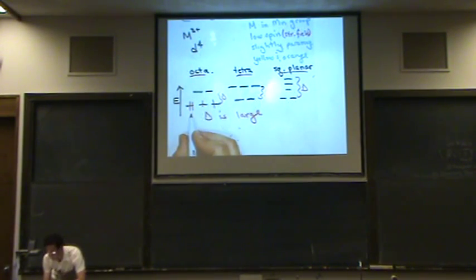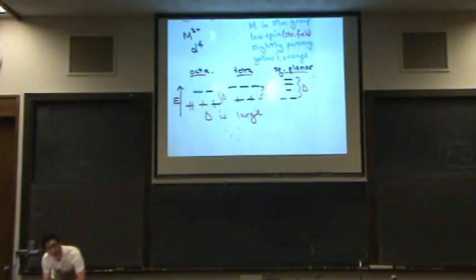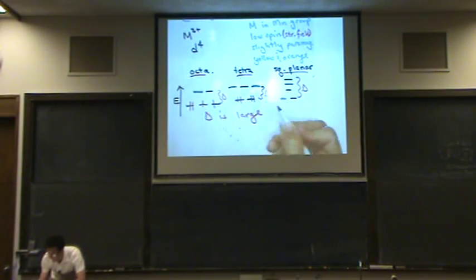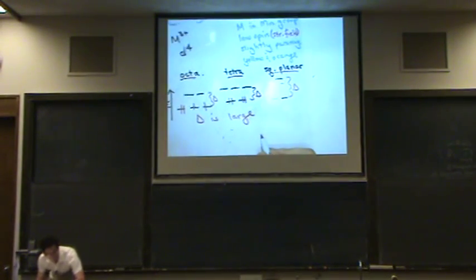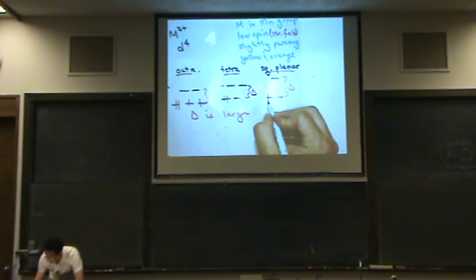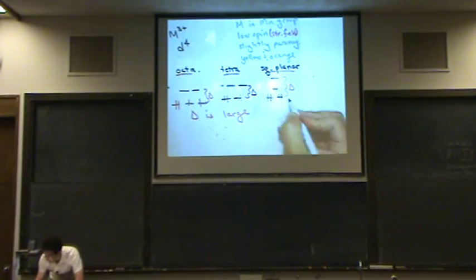That's octahedral. Let's try tetrahedral. One, two. Because delta is large, I'm going to keep everything on the bottom level as long as possible. Three, four. And then for the square planar, I get one, two. Delta is large again. Keep them on the low level. Three and four.